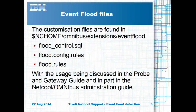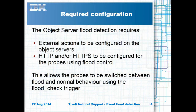The customisation files are located in the $omnihome/omnibus/extensions/eventflood directory. The eventflood extensions implementation is discussed in both the probe and gateways guide and Netcall Omnibus administration manual. Part of the solution requires object server external actions to be used and the HTTP or HTTPS method for probe control. It is therefore important to review your system and Netcall Omnibus manuals so that these methods are fully understood.